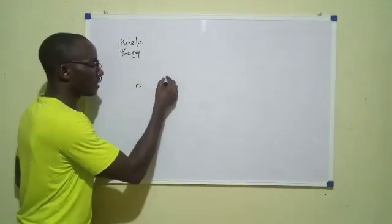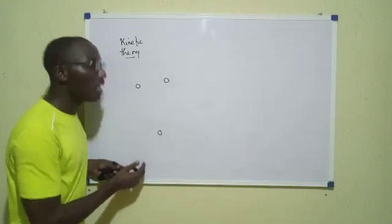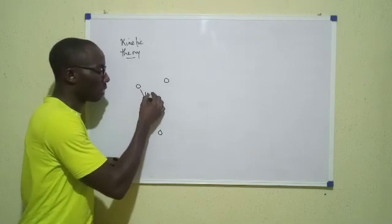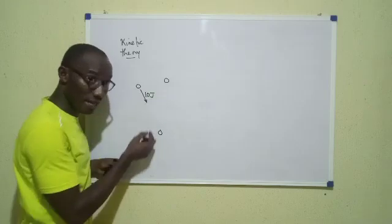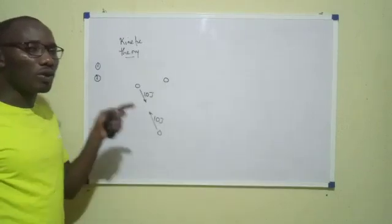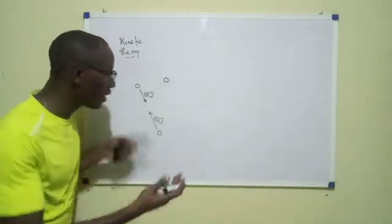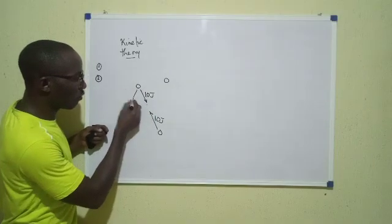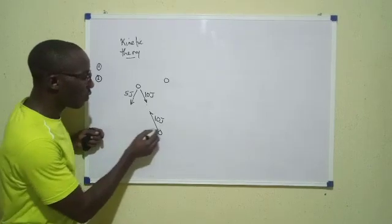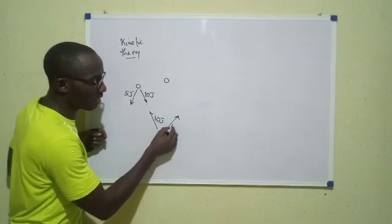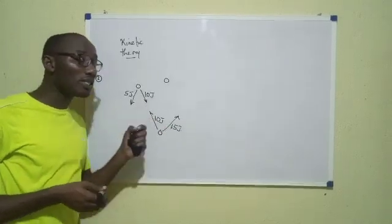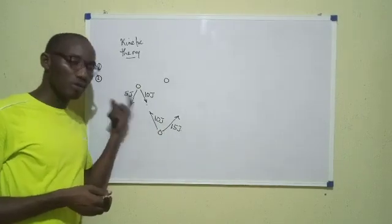Now, see what that means. Let's say this is a gas molecule, and this is another gas molecule. If this gas molecule has kinetic energy of 10 joules, and this one also has kinetic energy of 10 joules, and then they collide. By the time they collide, one of them could slow down while the other becomes faster. So, after collision, this now moves in that direction with a new kinetic energy of 5 joules, whereas this moves in that direction with a new kinetic energy of 15 joules. So, you see that before collision, their total kinetic energy was 20 joules, and after collision, it remained 20 joules.